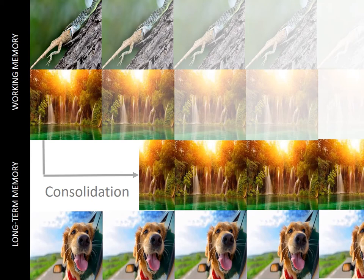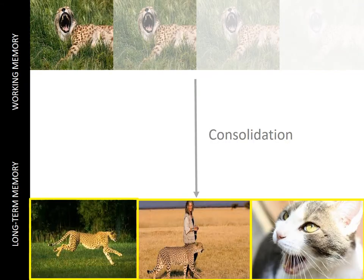So how can you shift information from working memory into long-term memory? You can apply a variety of strategies. For example, you can first retrieve other information about the topic. Suppose you learn that cheetahs actually meow. To memorise this, you could first retrieve past knowledge — cheetahs run fast, are seldom aggressive to humans, and domestic cats meow — then relate the new information to this past knowledge. Material connected to past knowledge is more likely to be consolidated into long-term memory.